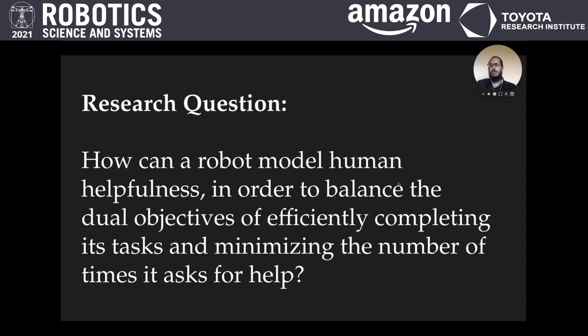In this work, we ask how can a robot model human helpfulness in order to balance the dual objectives of efficiently completing its tasks and minimizing the number of times it asks for help. We consider two types of factors when modeling human helpfulness: